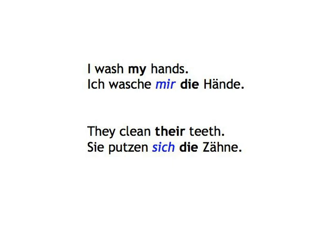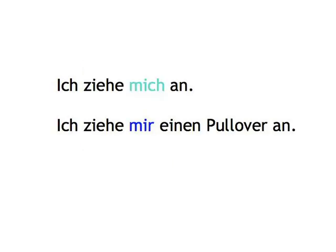In fact, in many similar instances, English does not express at all that the action is directed to oneself, as in: I'm getting dressed or I'm putting on a jumper. Whereas in German, we're obliged to say Ich ziehe mich an. Ich ziehe mir einen Pullover an. The same principle applies to a few non-grooming verbs which have both a direct object and a reflexive pronoun, which expresses that the action is directed back to yourself.